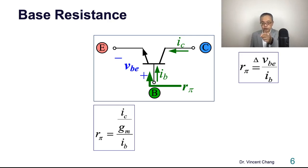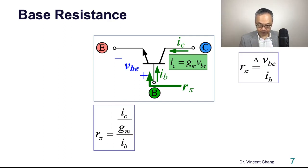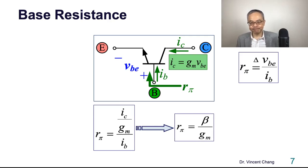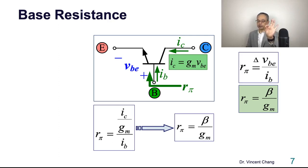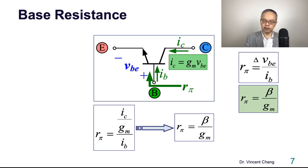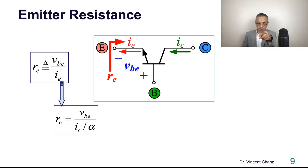IC equals gm times VBE, and IC divided by IB is beta, so R-pi equals beta over gm. But who decides gm — the transconductance? The bias current. Higher bias current IC gives higher transconductance and lower R-pi. R-pi is an AC parameter of the device that depends on the DC bias.